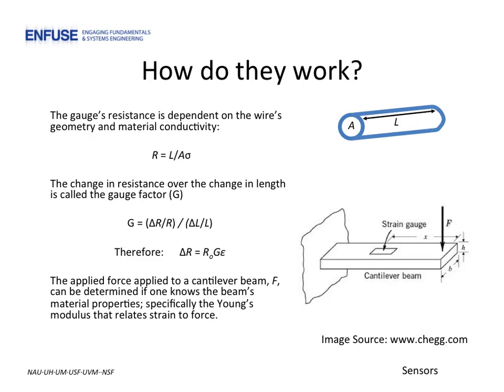So how do strain gauges work? As you may recall from early in your circuits class, the resistance of a wire is dependent on its total length, its cross-sectional area, and the conductivity of the material it is made of. The relationship between these parameters is given by this equation.